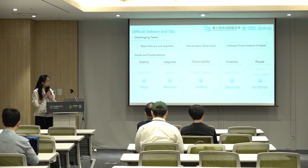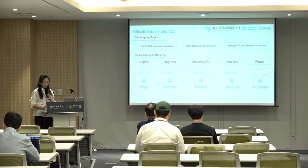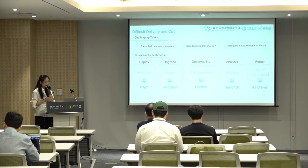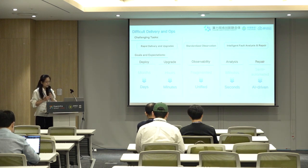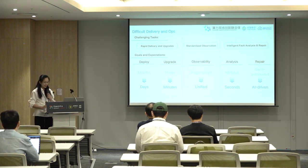With the rapid development of China Mobile Cloud and continuous expansion of server scale, we have encountered many problems in delivery and operation, including requirements for rapid delivery and upgrades, standardized observation, and intelligent fault analysis and repair. Our deployment time needs to be reduced from three months to days, and upgrade time needs to be reduced from hours to minutes. This has led us to start thinking and planning the architecture of cloud-native and AIOps.